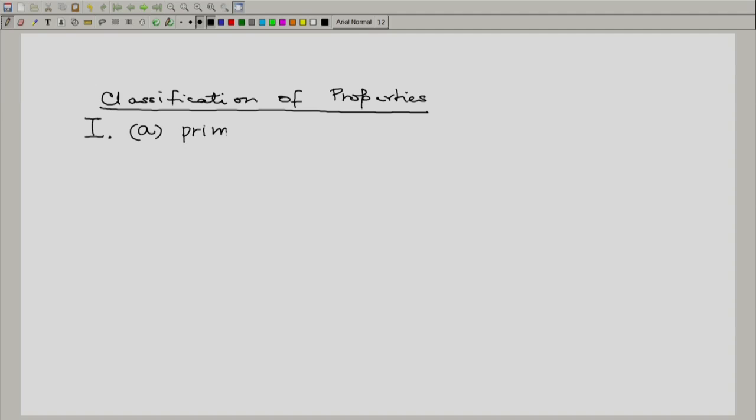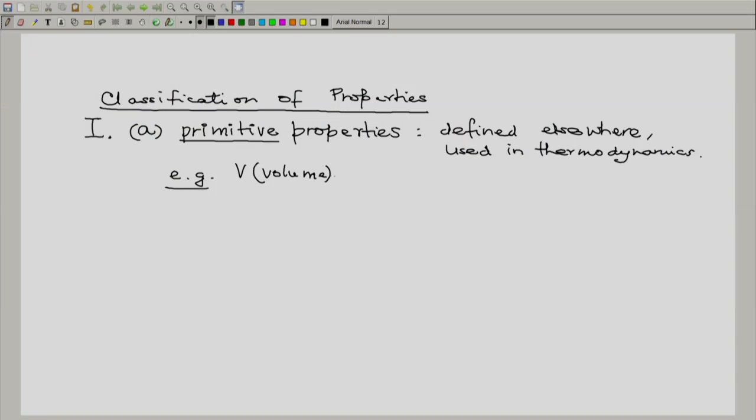For example, some properties could be primitive properties. Primitive properties are defined elsewhere and used in thermodynamics. For example, from geometry we use volume.